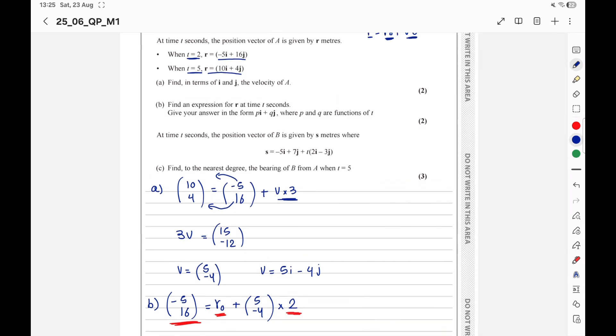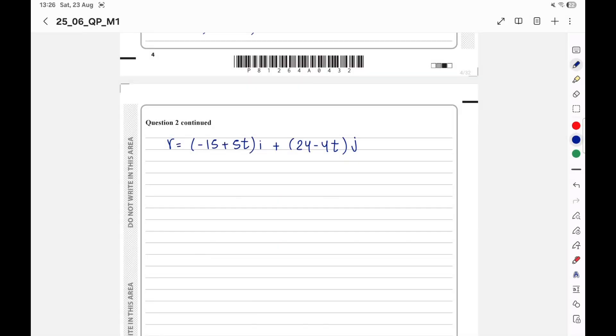Last part, part C. At time t seconds, the position vector of B is given by s. s is negative 5i plus 7j plus t multiply 2i minus 3j. The position vector of B in terms of t is given. Find to the nearest degree, the bearing of B from A when t equal 5. To solve part C, first I have to get AB. AB is equal to RB minus RA or s minus r because he named RB s and named RA r.